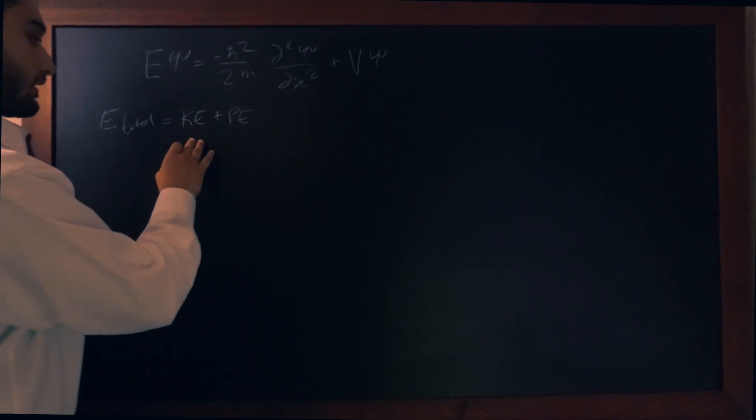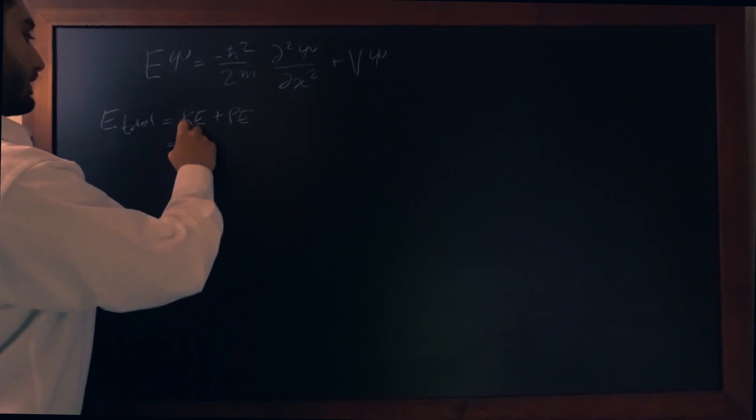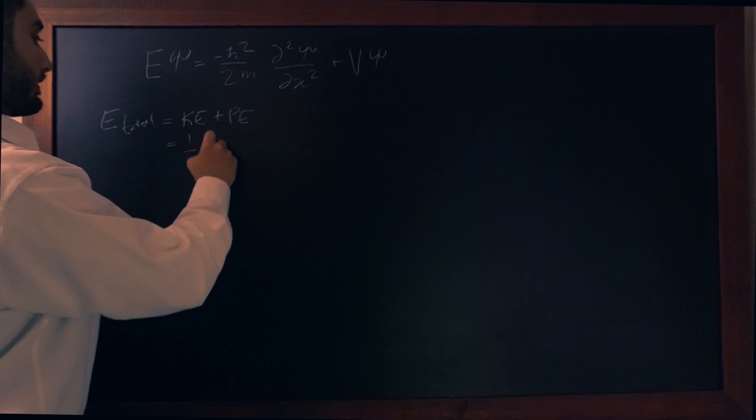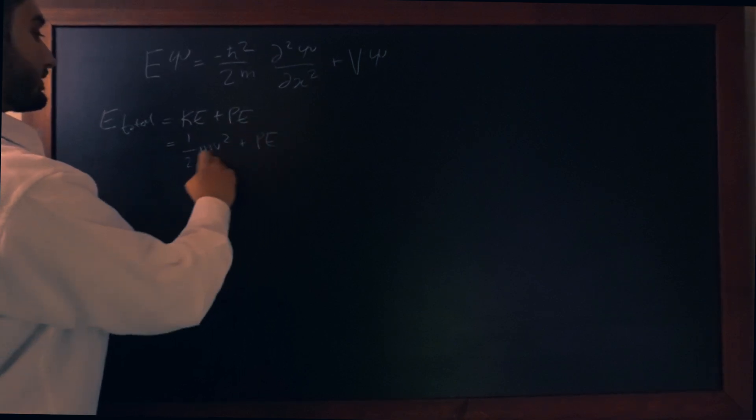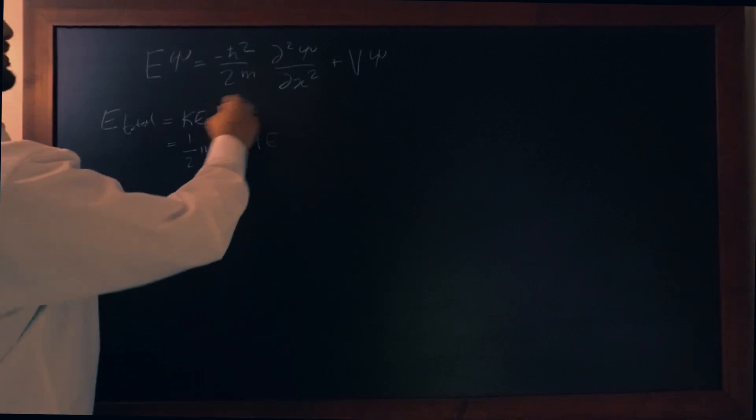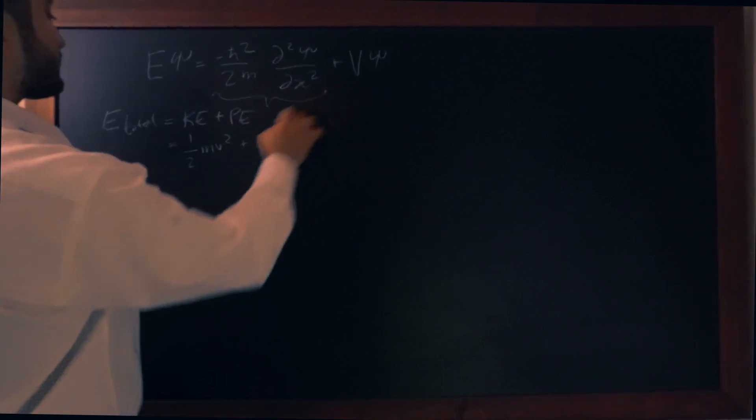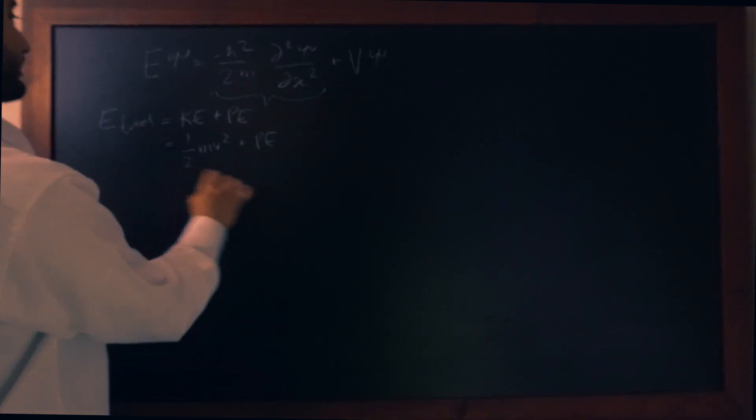Another way of writing kinetic energy is saying half mv squared. And we're going to keep this potential energy the same. So now let's try to derive this part of the equation using this half mv squared.